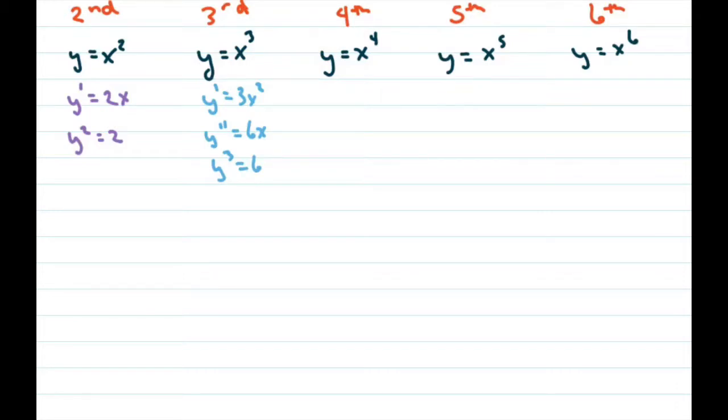And then for this one, we'd have the y prime equals 4x cubed, and then we have y double prime equals 12x squared. The third derivative is 24x, and the fourth derivative is just 24.